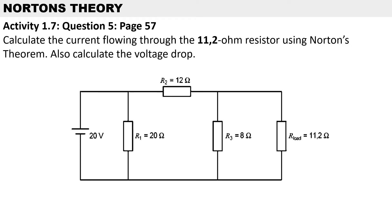This calculation comes from Activity 1.7 in our textbook, question 5. In this question we need to calculate the current flowing through the 11.2 ohm resistor using Norton's theorem, and we also need to calculate the voltage drop. Now I want to go into the circuit diagram in detail — let's take a look at our first step.